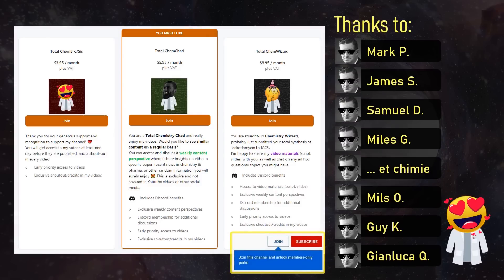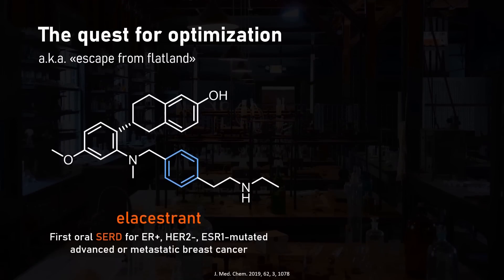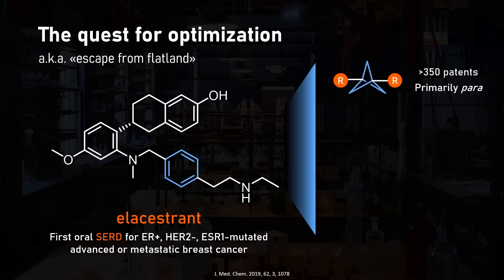Let's look at a random pharmaceutical such as ilacastrant, the first oral selective estrogen receptor degrader recently approved by the FDA. Like many drugs, it contains flat apolar benzene rings. To harness additional binding interactions due to three-dimensionality and to optimize pharmacokinetic properties like solubility or clearance while keeping overall geometry intact, chemists are exploring various bioisostere groups. With over 350 patents, bicyclopentane or BCP is the most explored motif, however it only directionally replicates benzene size.